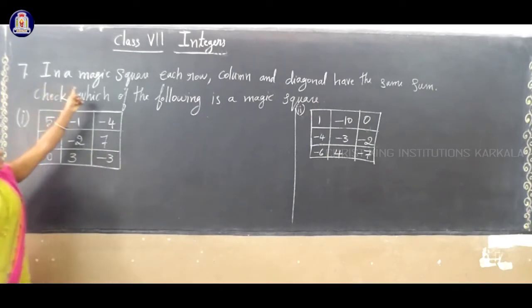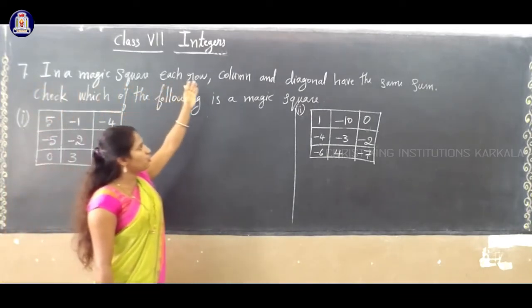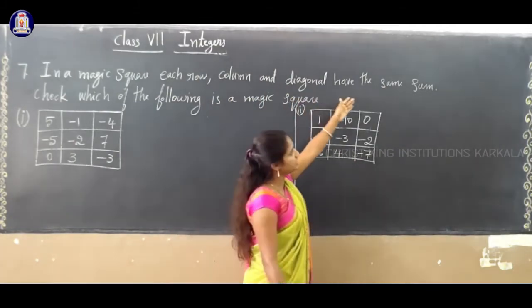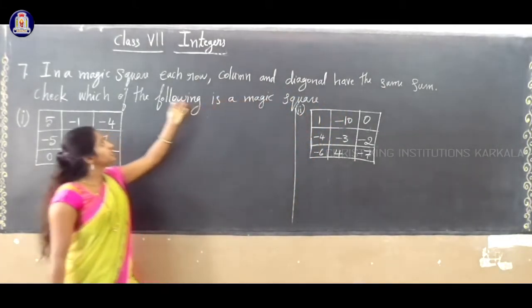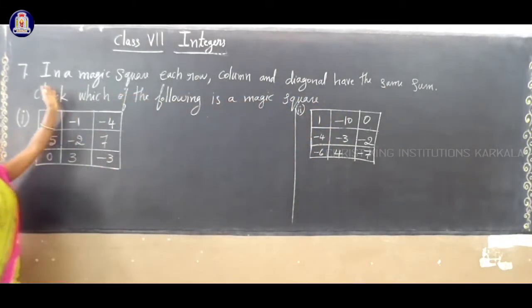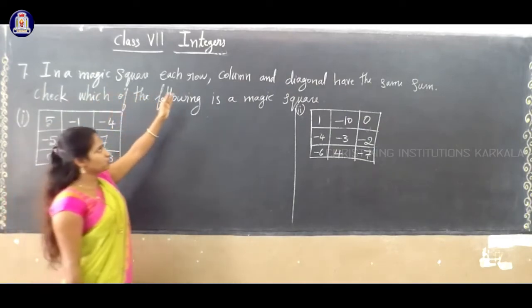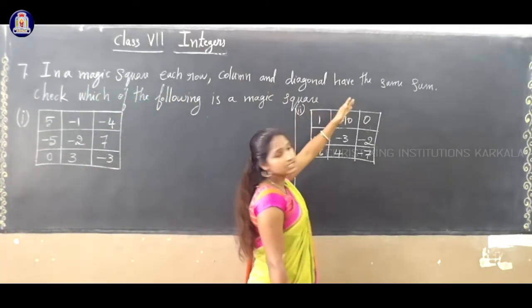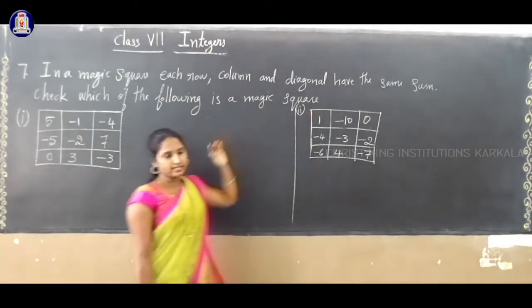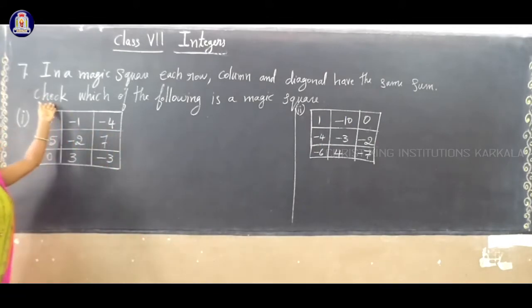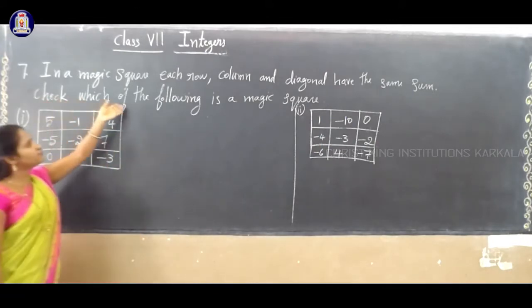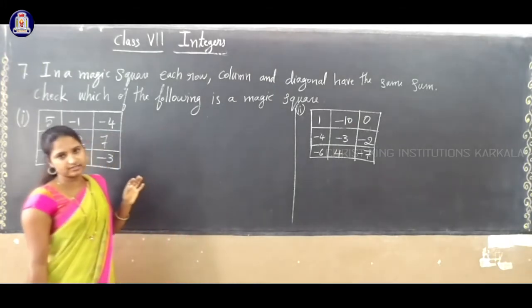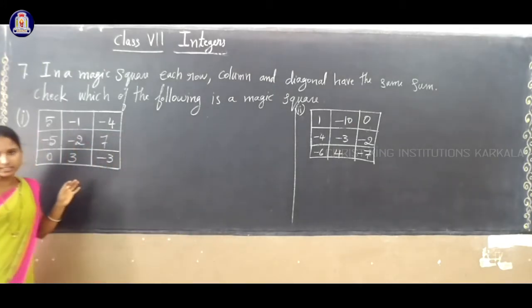In a magic square, each row, column and diagonal have the same sum. See the question now. In a magic square, each row, column and diagonal have the same sum. Check which of the following is a magic square.